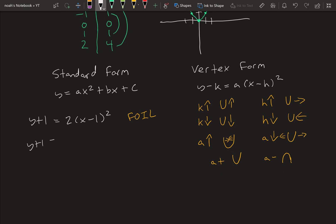So to make it easier, we can write x minus 1, x minus 1. And then we can start FOILing. So first, x times x is x squared. Outer is minus x. Inner is minus x. Last is plus 1.